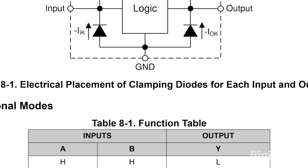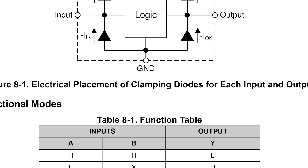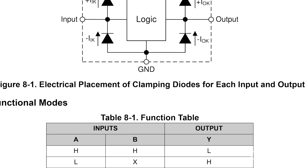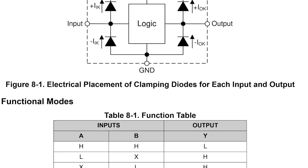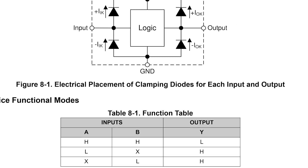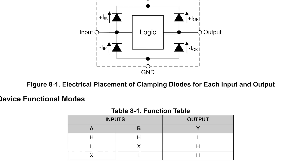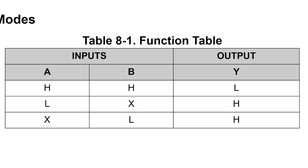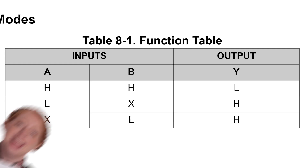Now onto a few more advanced sections that might be included in a part's datasheet, depending on what it is. If your datasheet includes a truth table, you're likely dealing with a digital logic component like a multiplexer or a logic gate. A truth table shows you how the outputs respond to different combinations of inputs — showing you the cause and effect. Each row represents a different input condition, and the corresponding output tells you what the chip will do in that situation. It's super helpful for understanding how a part behaves before you even hook it up.